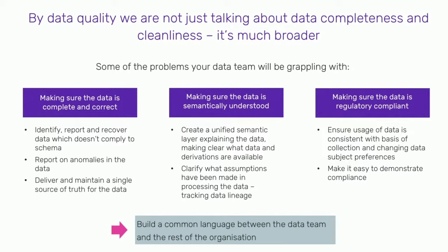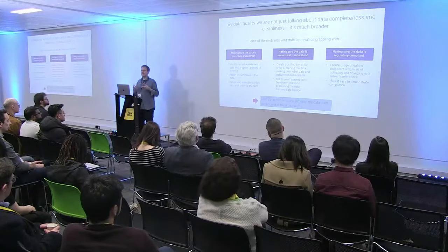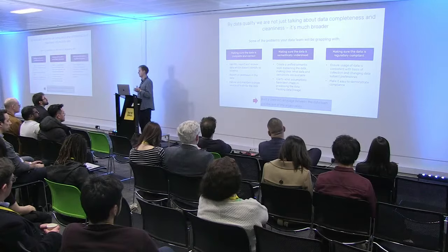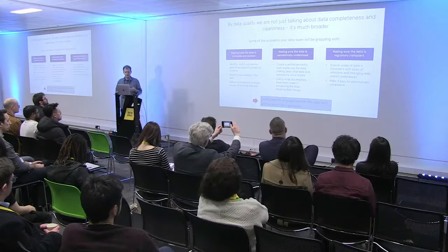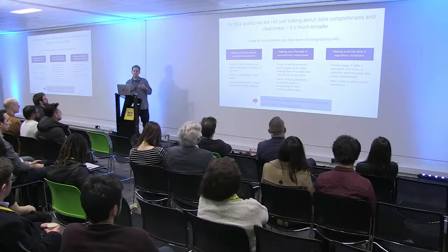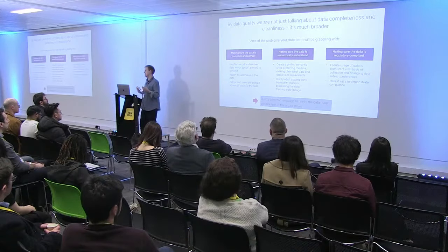Making sure data is semantically understood is also really important. This is sometimes called a unified semantic layer — fundamentally it's some place for data meaning to live, where people understand what data is available, where to get it, and understand the lineage: what assumptions went into processing and modeling that data. It's easy for things to break down here because it fundamentally becomes a communication problem.